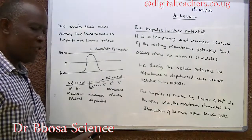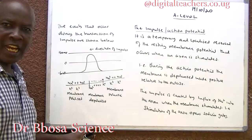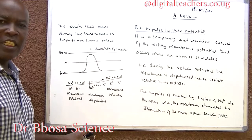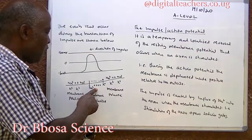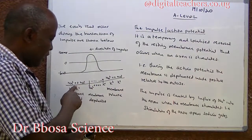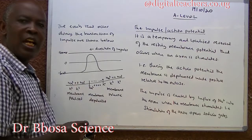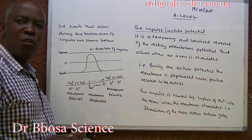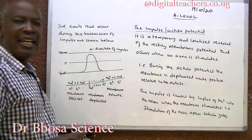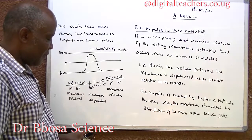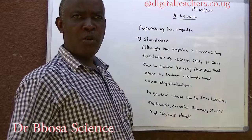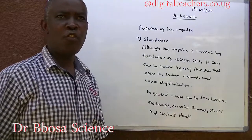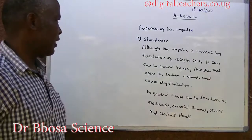The movement of impulses in the axon is due to movement of action potentials along the axon. Properties of impulses.